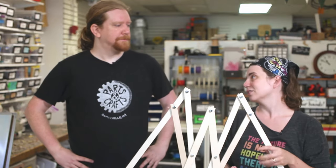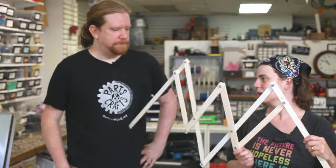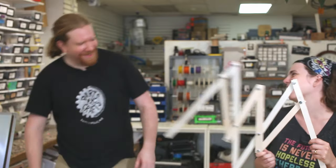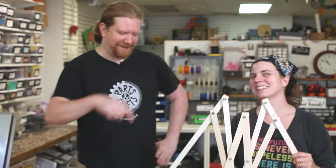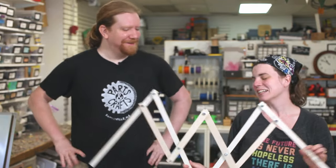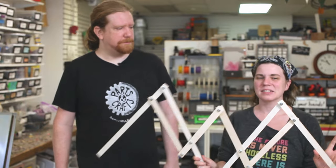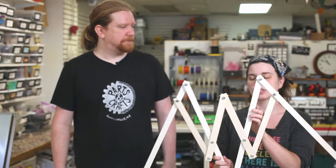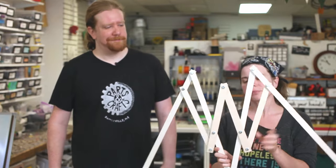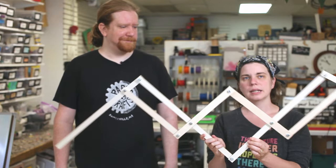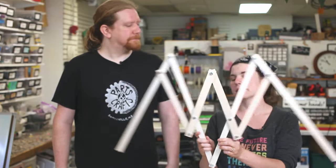This is what's called a lazy tongs linkage. You've probably seen this in the boxing glove extender thing, right? Exactly. There's usually a boxing glove at the end. It's called lazy tongs. The fancy name is plain translational scissor linkage. And you use it to build these extender things.